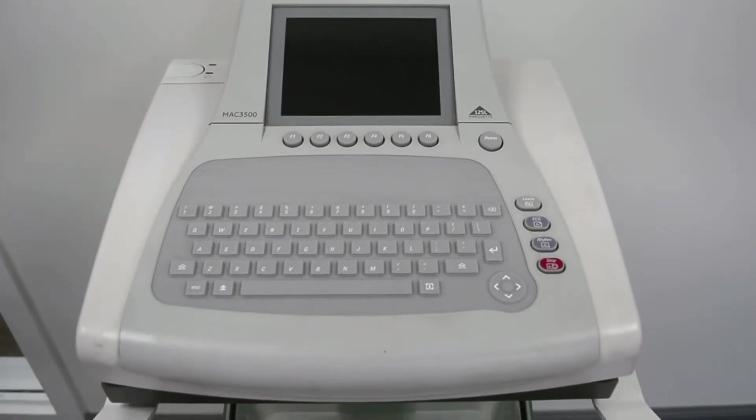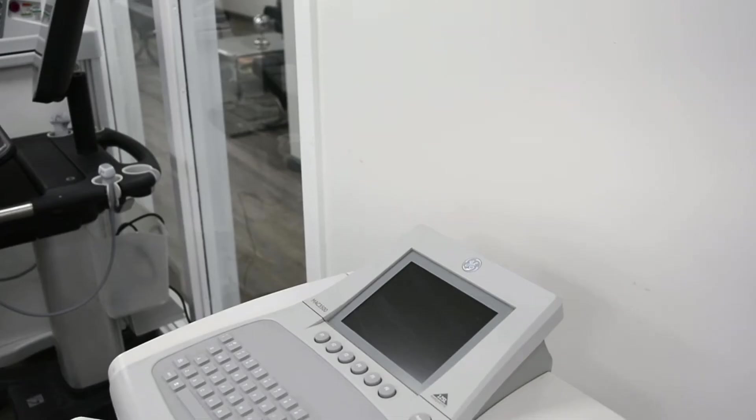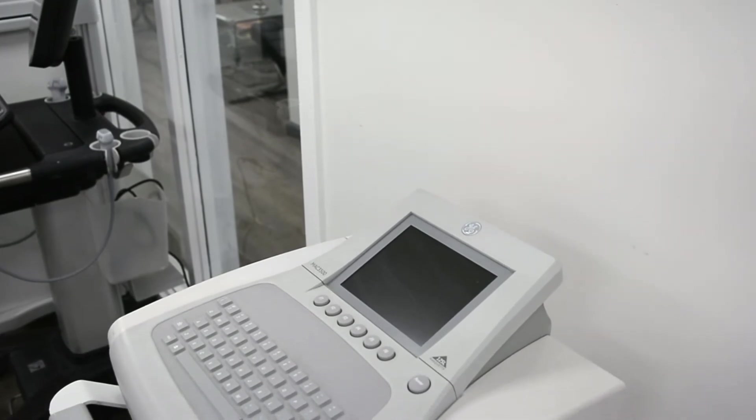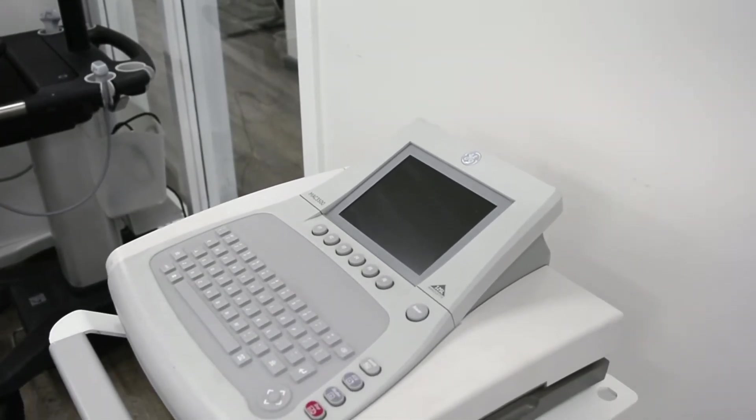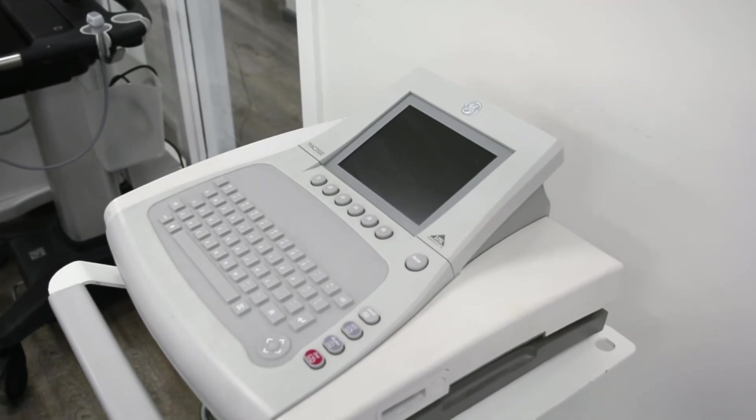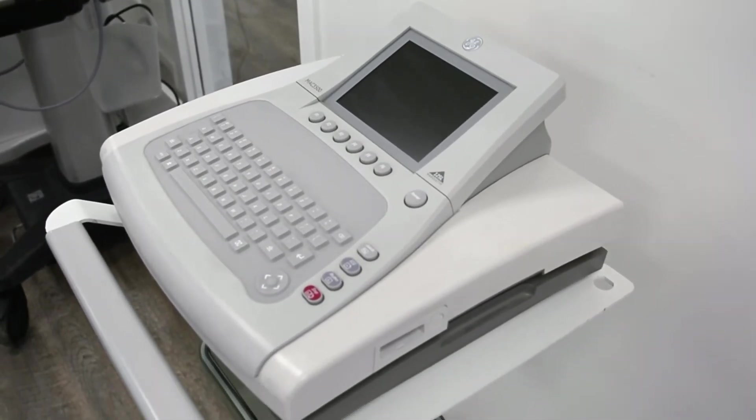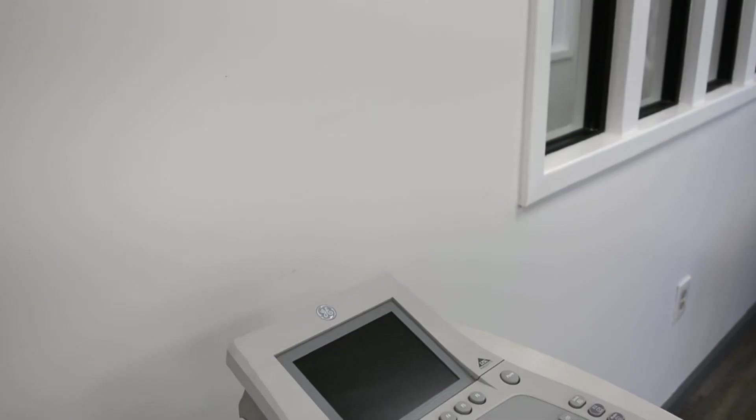The GE 3500 features a 6.5-inch color display and is one of the most user-friendly EKG machines available from GE with a common interface and intuitive operation.